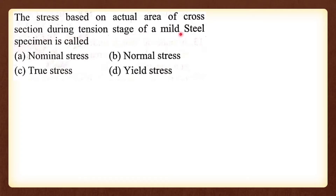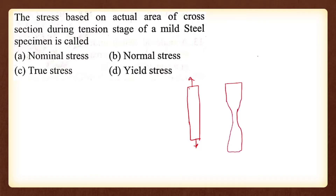The stress based on actual area of cross section during the tension test of a mild steel specimen is called true stress. When we consider the actual area at a particular time during testing and calculate stress, that is true stress. Nominal stress is calculated using the initial area, which is also called engineering stress.